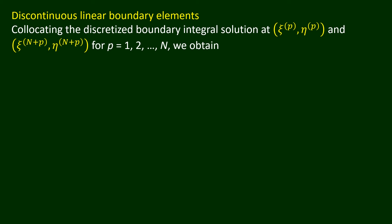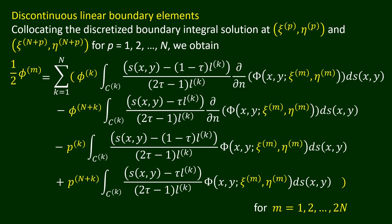By collocating at the points (xi_k, eta_k) and (xi_{n+k}, eta_{n+k}), for k equals 1, 2, and so on until n, we obtain 2n linear algebraic equations. These equations can be used to solve approximately the boundary value problem for the two-dimensional Laplace's equation in the region R bounded by a simple closed curve C. If either phi or del phi over del n is known over each of the boundary elements, the linear algebraic equations contain 2n unknowns. The programming of these equations for solving the boundary value problem is detailed in the book, A Beginner's Course in Boundary Element Methods.